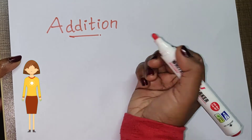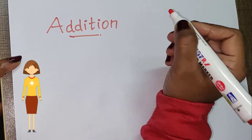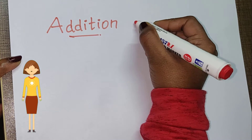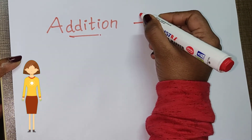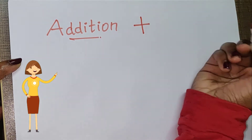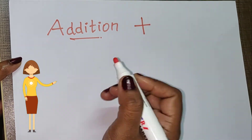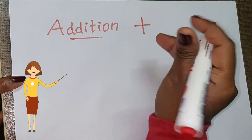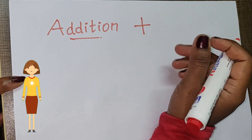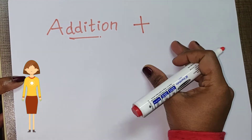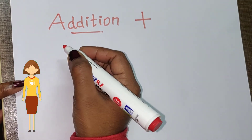So the symbol for addition is plus. A small sleeping line with a standing line in the middle of the sleeping line which makes plus. This is the symbol for addition. In simple English, addition means calculating the total of two or more numbers or amounts.